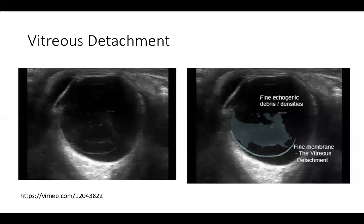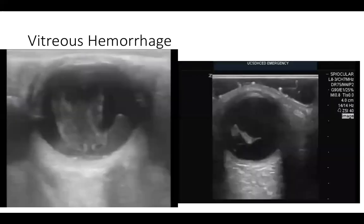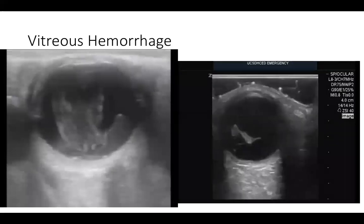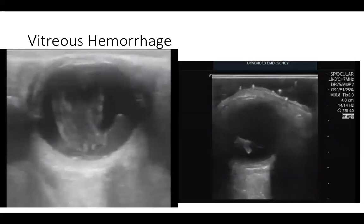Next we would look for a vitreous detachment. You can clearly tell this looks quite different — there's a bunch of echoes within that posterior chamber. Normal posterior chambers should be completely anechoic, but here you're seeing multiple different echoes consistent with vitreous detachment or vitreous hemorrhage. Many people call this a 'washing machine sign' because it looks like something is swirling within that posterior chamber — like clothes swirling inside a washing machine.